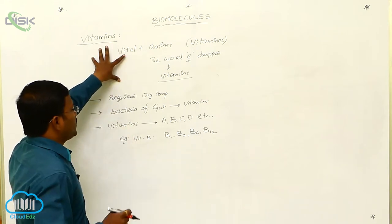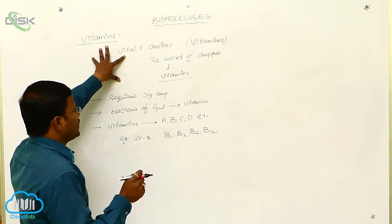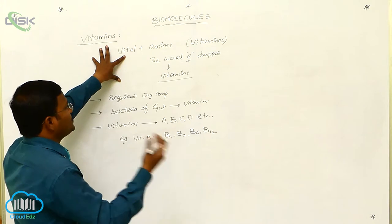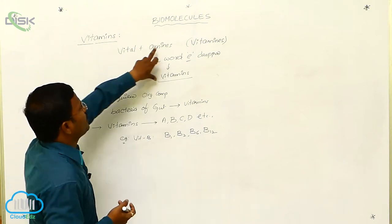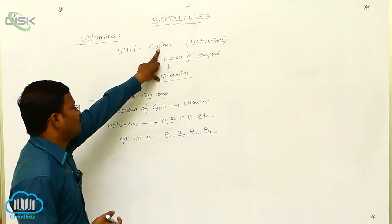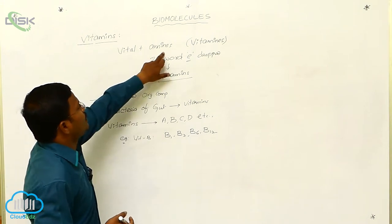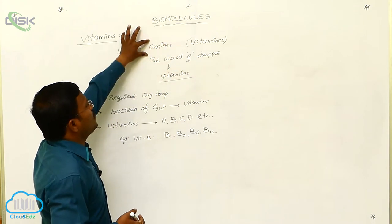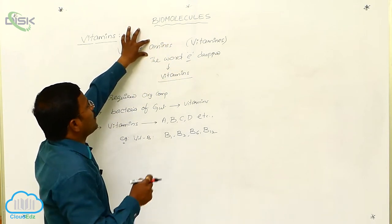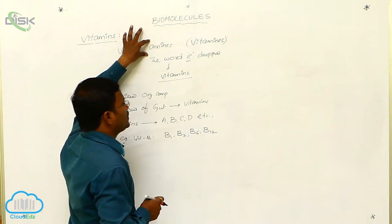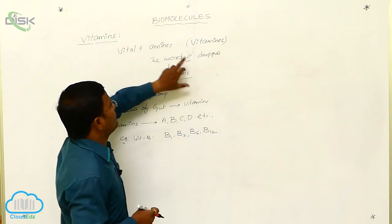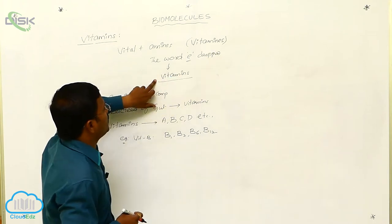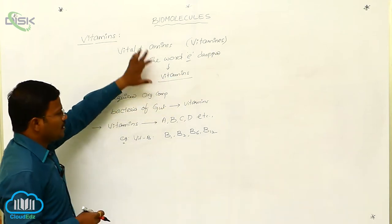To recap: the word 'vitamin' is derived from 'vital plus amines' because scientists imagined all vitamins have at least one amine functional group. Later, scientists identified that many vitamins are devoid of amine functional groups, so the letter 'e' was dropped from 'vitamines' and it was finally concluded as 'vitamins.'